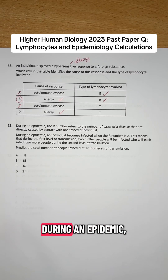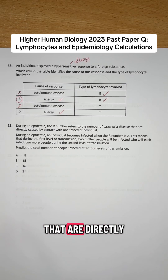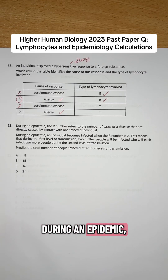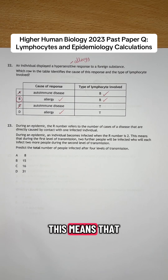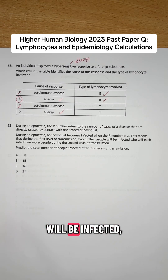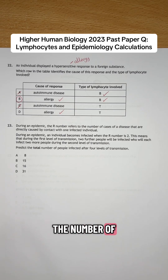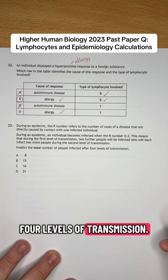Question 23: during an epidemic, the R number refers to the number of cases of a disease that are directly caused by contact with one infected individual. During an epidemic, an individual becomes infected when the R number is two. This means that during the first level of transmission, two further people will be infected, who will each then infect two more people during the next level of transmission, and so on. Predict the number of people infected after four levels of transmission.